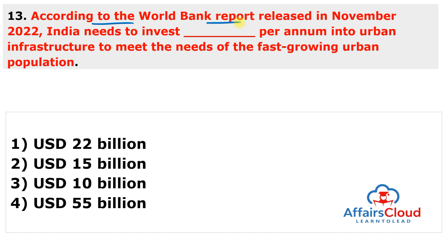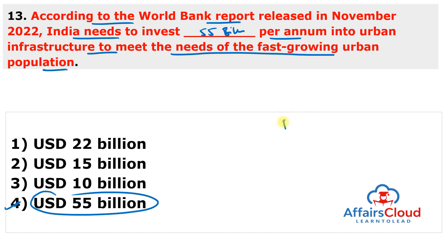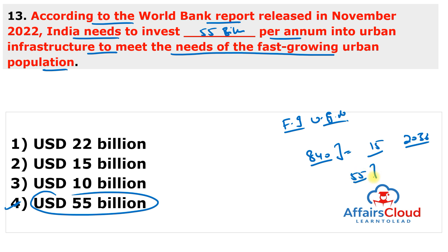According to the World Bank report released in November, India needs to invest $55 billion per annum into urban infrastructure to meet the needs of its fast-growing urban population. The report, titled 'Financing India's Urban Infrastructure Needs,' states India needs to invest $840 billion over the next 15 years till 2036 (at 2020 prices), equivalent to 1.18% of estimated GDP over this period.